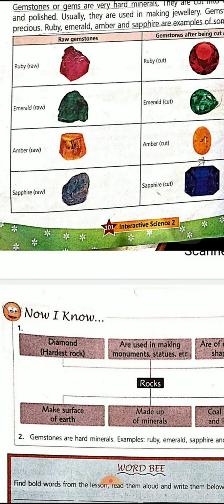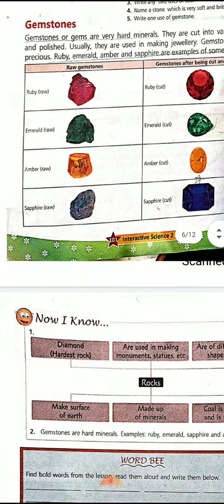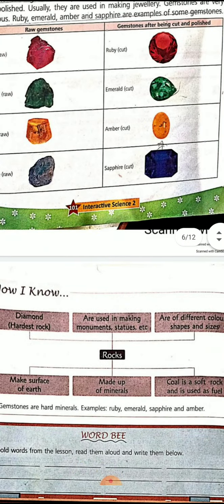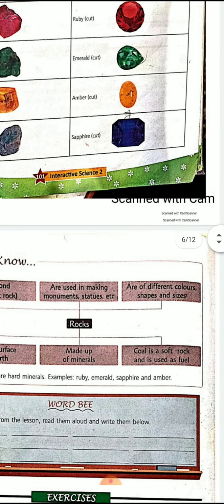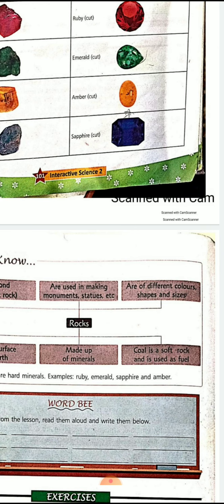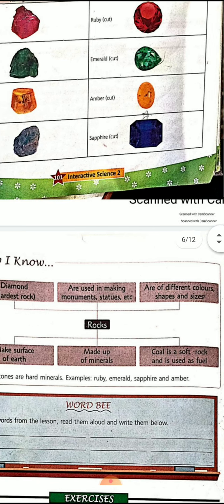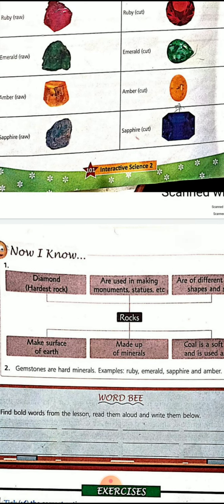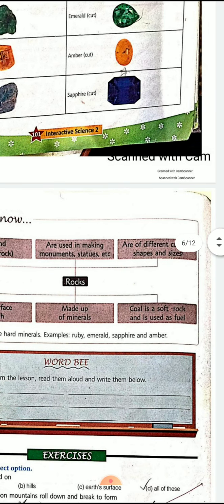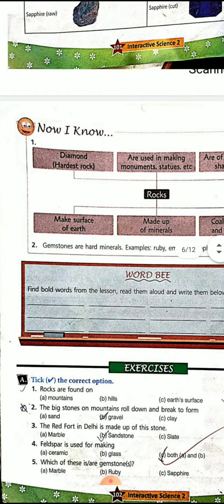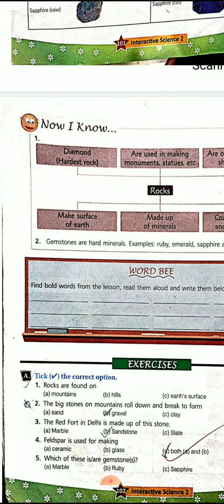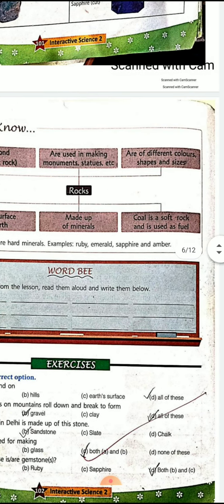Now let's review what we read in the chapter. Diamond is the hardest rock. Rock is used for making monuments. Rocks are of different shapes, colors, and sizes. Rocks make the surface of the earth and are made up of minerals. Coal is a soft rock and is used as fuel. Gemstones are hard minerals — examples are ruby, emerald, sapphire, and amber.